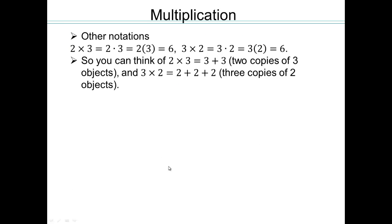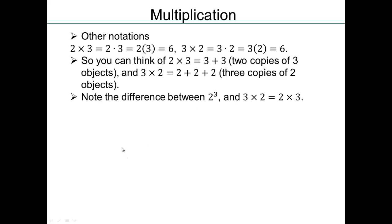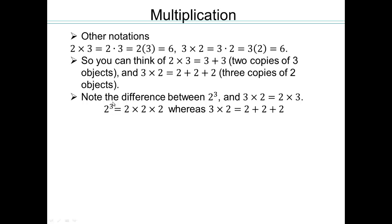Let's get familiar with some other notations. 2 times 3 is 3 plus 3. 3 times 2 is 2 plus 2 plus 2. What is the difference between 2 to the third and 3 times 2? 2 to the third means base is 2, exponent is 3, so it means 2 times 2 times 2, three times. Whereas 3 times 2 means 2 plus 2 plus 2, three times. So adding 2 three times gives us 3 times 2, whereas multiplying 2 by itself three times gives you 2 to the power of 3. It's very important that you learn to distinguish between those two. 2 to the power of 3 is three 2's multiplied together, whereas 3 times 2 is 2 plus 2 plus 2.